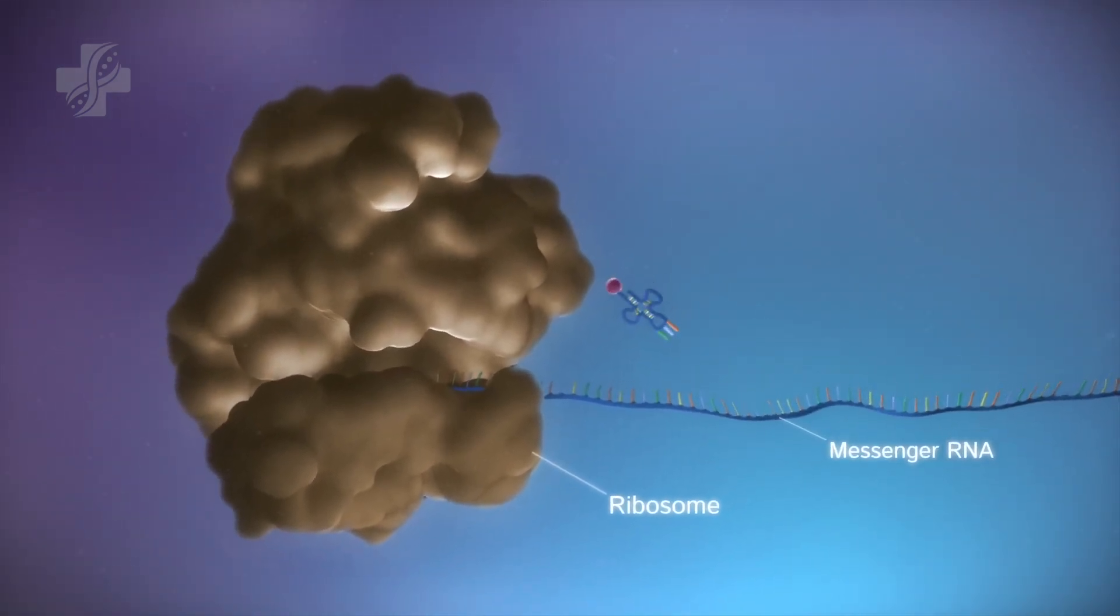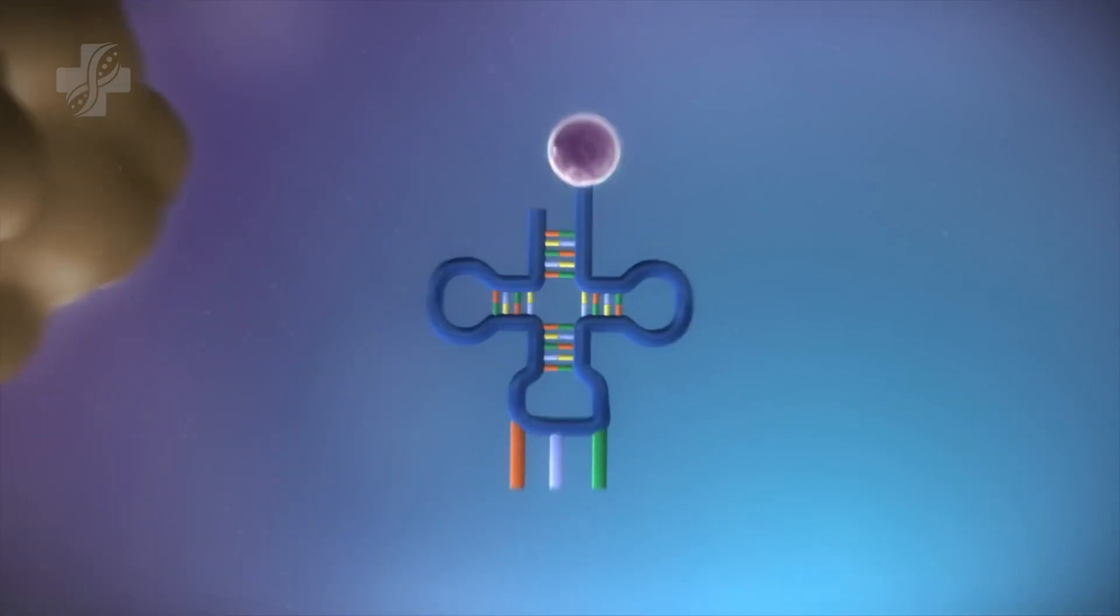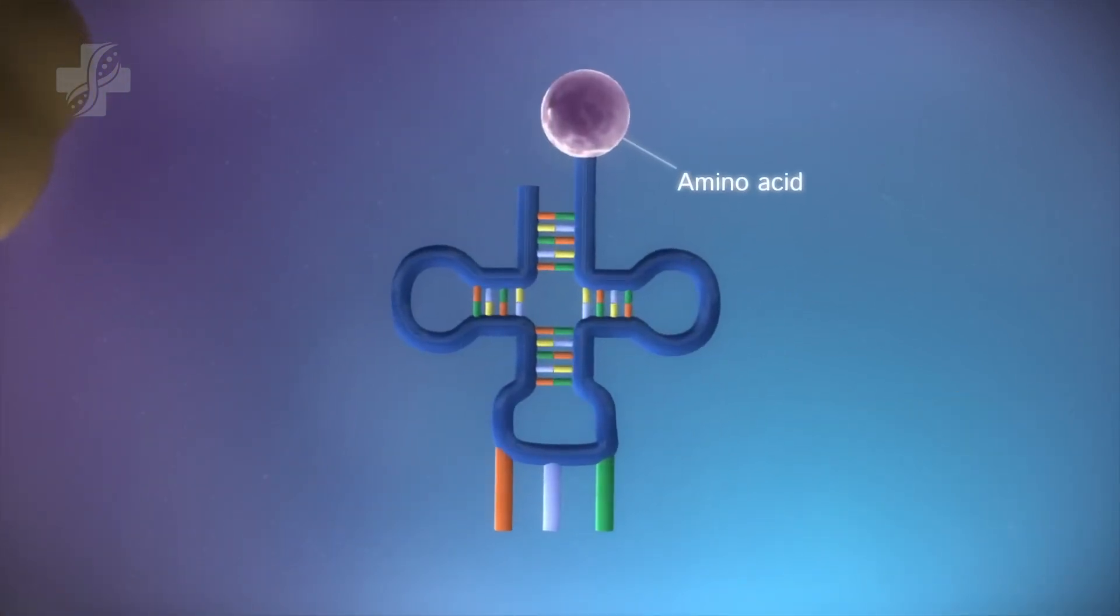The ribosome reads the code in the messenger RNA to produce a chain of amino acids. There are 20 different types of amino acids.